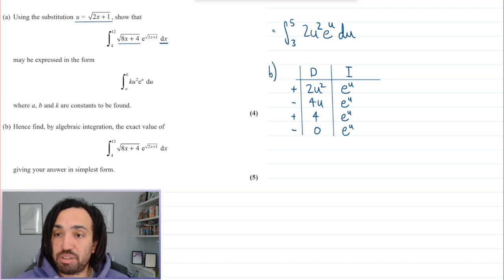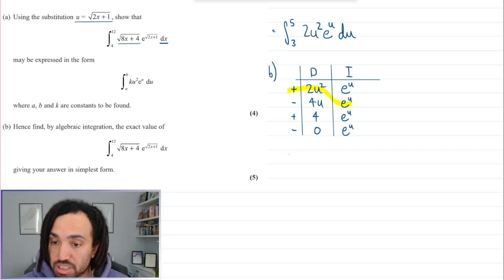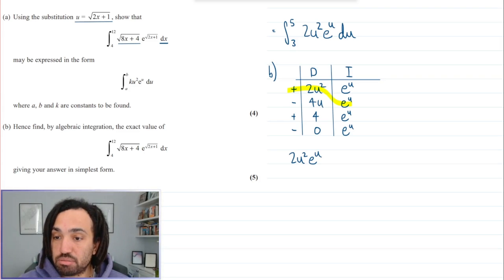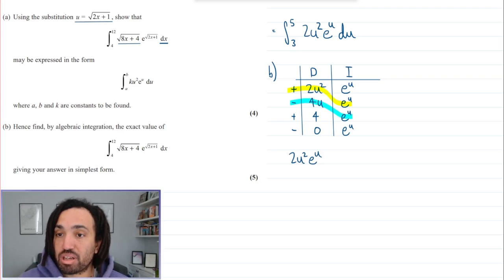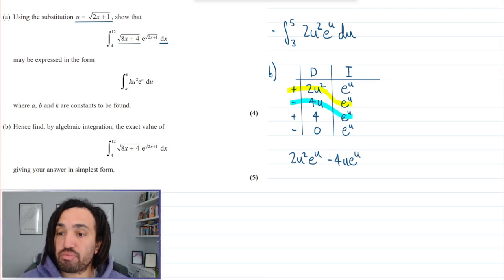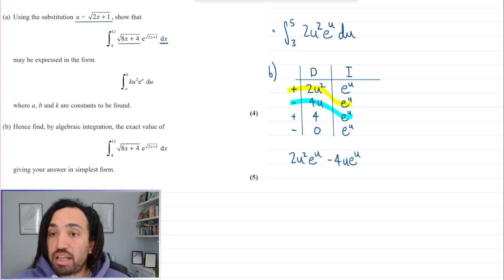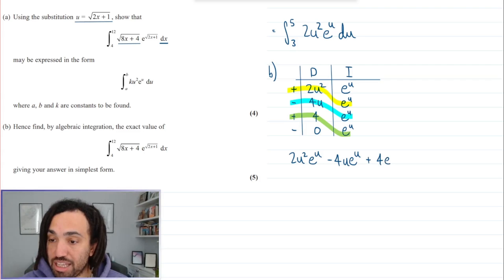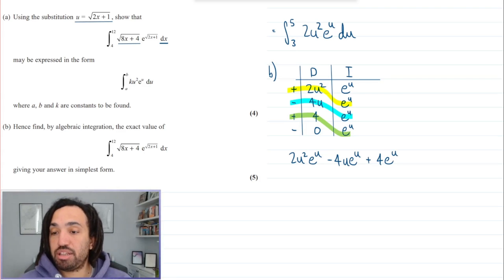So what makes this method so good is we have the answer, it's all here. What we have to do is just multiply this yellow line together which gives me 2u squared e to the u. And then we add on this blue line which looks like this. That would be negative because there's a minus sign there, 4u e to the u. And then finally we add on, well we just carry on basically, we go with this one next which would be add on 4e to the u.